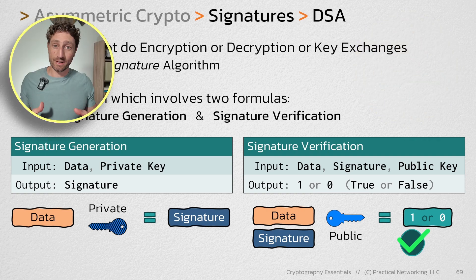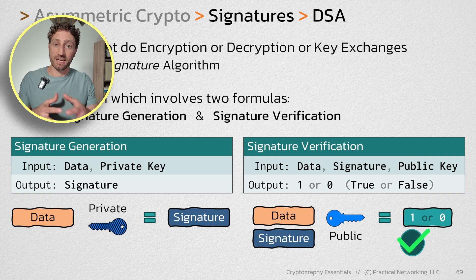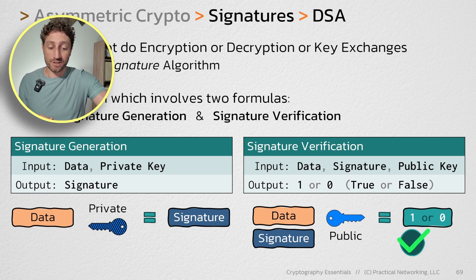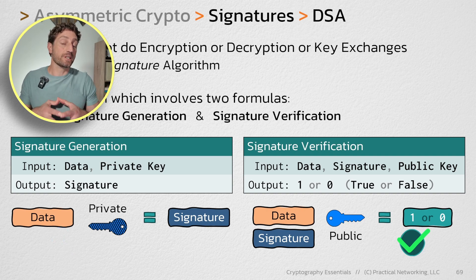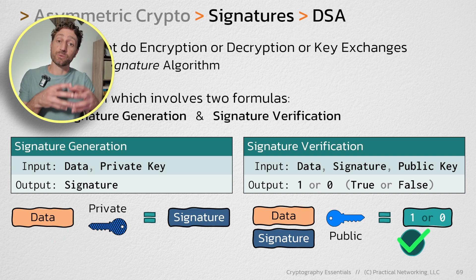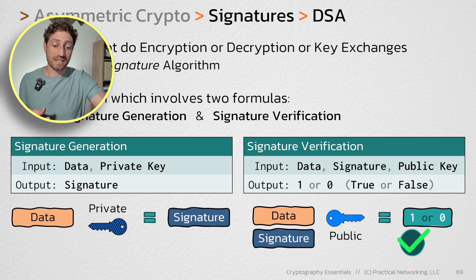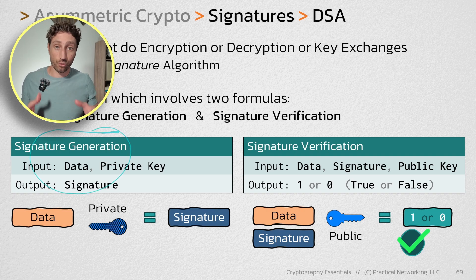Even though it's not explicitly illustrated on the diagram, a hashing step does still occur. Remember, the data can be arbitrary size, and we want to take that data and turn it into something smaller — a fixed width that represents the original data. That hashing step occurs inside the signature generation formula.